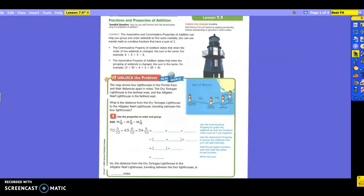Let's read the first bullet together. The commutative property of addition states that when the order of two addends is changed, the sum is the same. For example, four plus five is equal to five plus four. So all they did was change around the addends. Four was listed first in the first one, and five is listed first in the second one. So that's commutative property.